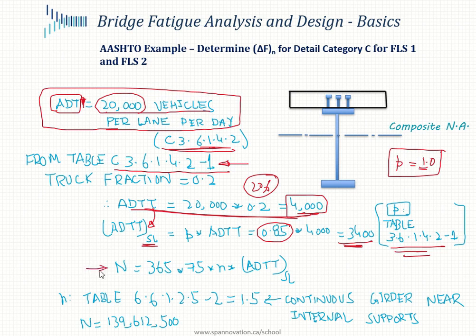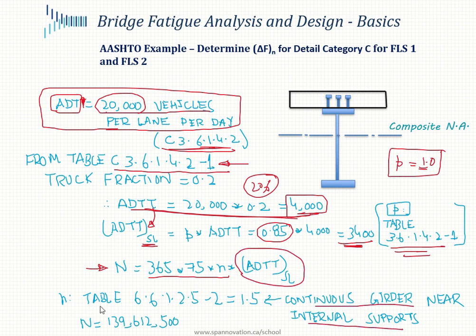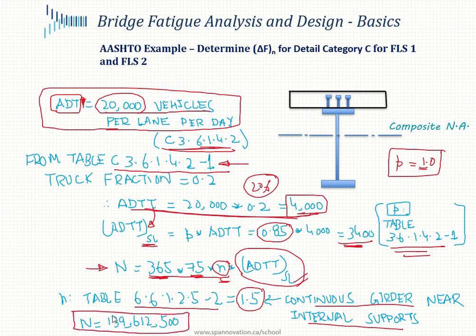Using the formula N = 365 × 75 × n × ADTT_SL: for a continuous girder near interior supports, table 6.6.1.2.5-2 gives n = 1.5. Multiplying 365 × 75 × 1.5 × 3,400, the total number of cycles over the bridge lifetime is 139,612,500 — approximately 139.6 million cycles.